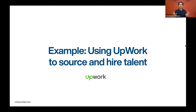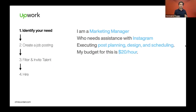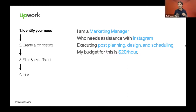Let's go through an example, focusing on Upwork to source and hire talent. There are four steps: identify your need, create your job posting, filter and invite talent, and hire. Taking the earlier example: let's say you're a marketing manager who needs assistance with Instagram — executing on post planning, design, and scheduling. Your budget is around $20 an hour. Now that you know what you need to get done, you can have a better understanding of what your job posting should entail to find the perfect person for the job.